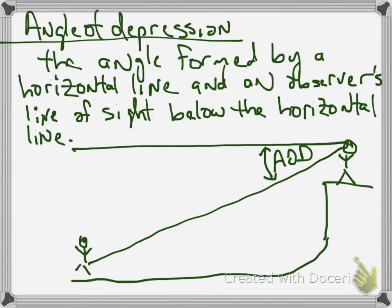An angle of depression would be looking at something down below the horizontal line. So here's again another person. They see a person in a pit or below them. And we have a horizontal line here and we have an angle of depression here. That right there gives you that angle.